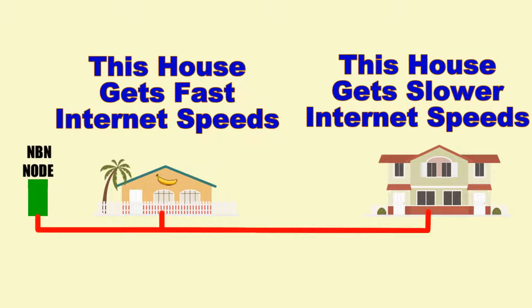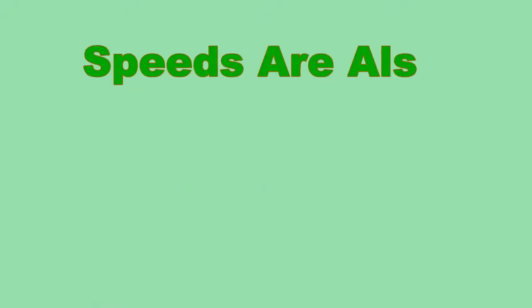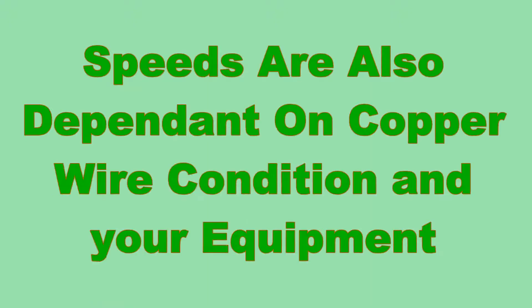Basically, this means if you are a short distance from a Node you should get fast speeds, and if you're a long way away from a Node you'll get slow speeds. The reason I say 'should' is because the connection speed also has to do with the condition of the copper wire and the equipment you use in your house.